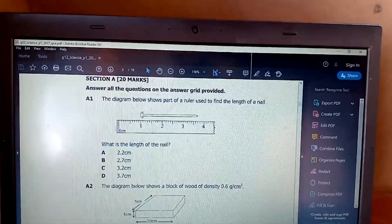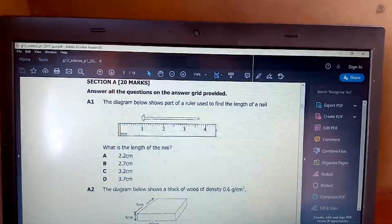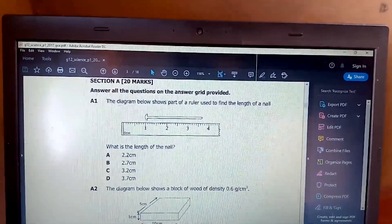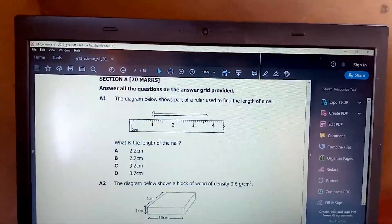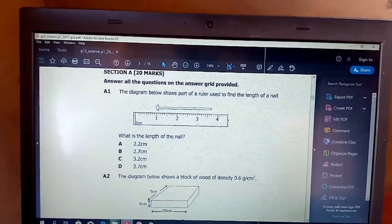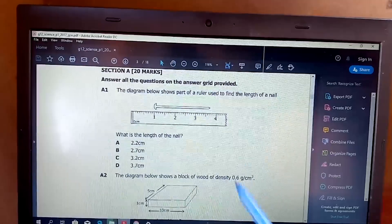Question 1: The diagram below shows part of a ruler used to find the length of a nail. What is the length of a nail? As you can see, the subdivisions are in 0.1 cm, or should I just say 1 mm.